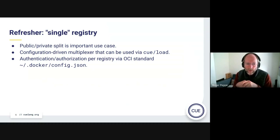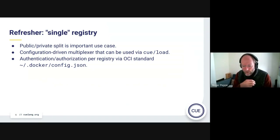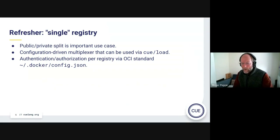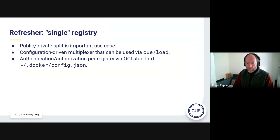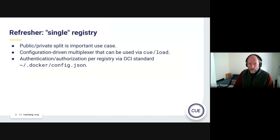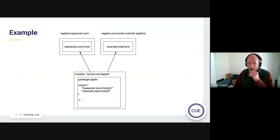One of the important use cases is being able to split modules between public and private registries. You have some sort of configuration file or environment variable which basically says these modules come from this registry, all the others come from some other registry. The authorization is via a configuration file — we'll support at least the standard configuration used for OCI registries, which is the Docker config format, despite the fact we're not Docker. That seems to be the standard way that authentication information is specified.